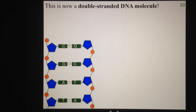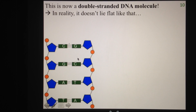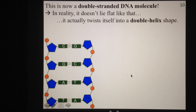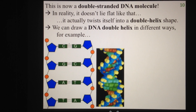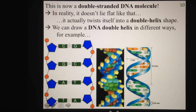In this way, we've basically made a double-stranded DNA molecule. In reality, this double-stranded DNA molecule doesn't lie flat like this — we just draw it that way so it's easier to see. It actually twists itself into a double-helix shape, which we can draw in many different ways. For example, there's a space-filling model showing a colored ball for each atom. Sometimes we abbreviate the sugar phosphate backbone into a ribbon, or if drawing it really small, we just draw two little ribbons.